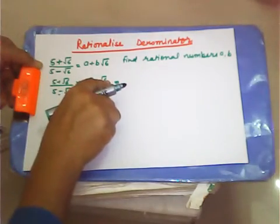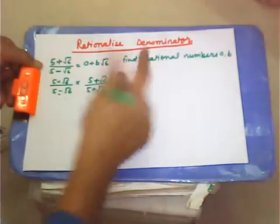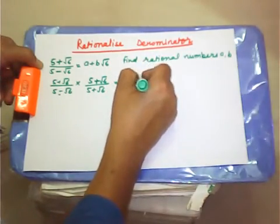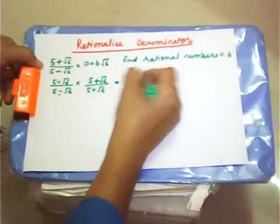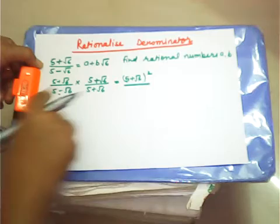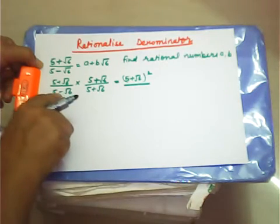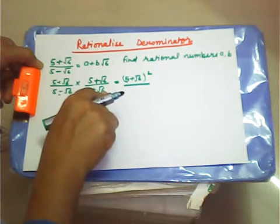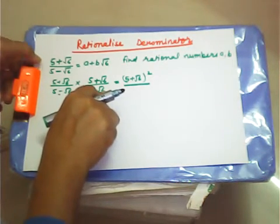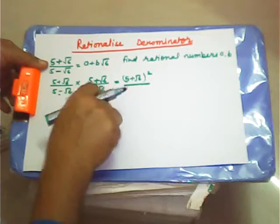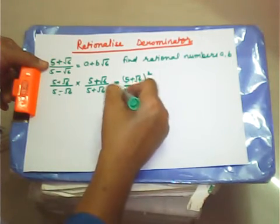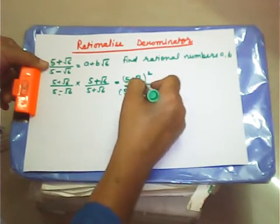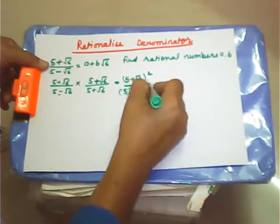The numerator becomes (5 + root 6) whole square, and the denominator, using the identity (A + B)(A - B) = A² - B², becomes 5 whole square minus root 6 whole square.